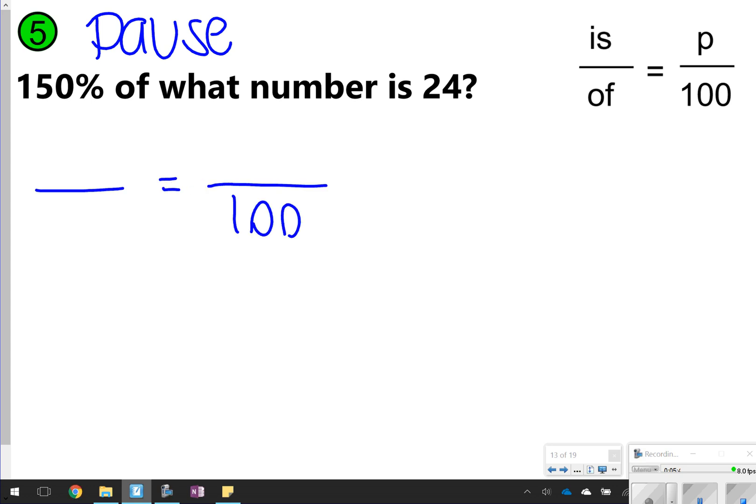All right, here we go. So we know 150% will always go over the 100. Yes, we know it's more than 100, so that means something might be a little bit different here. So 150% of what number is 24? 'Is' is 24 because it's following right of it, and we don't have the 'of'. So 'is' will go, will be the 24, so 24 should go on top, and then x will go on the bottom.